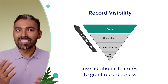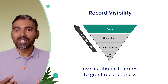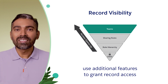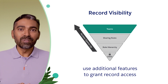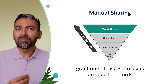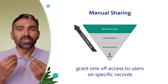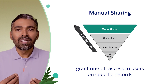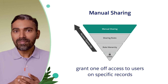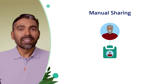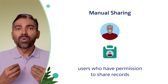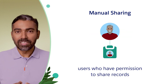Now, if all of this does not provide access to a specific record that a user wants, what you can finally do is use manual sharing to simply grant one-off access to those users on specific records. And this can be easily done by users who have those privileges.